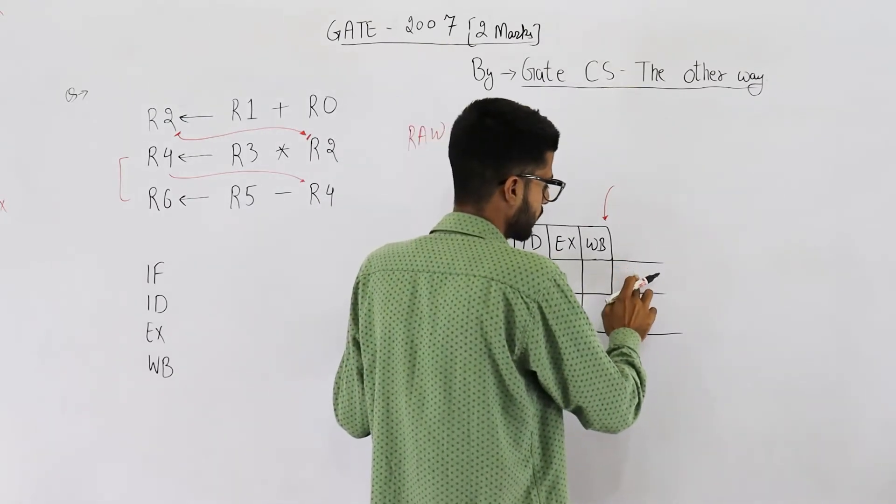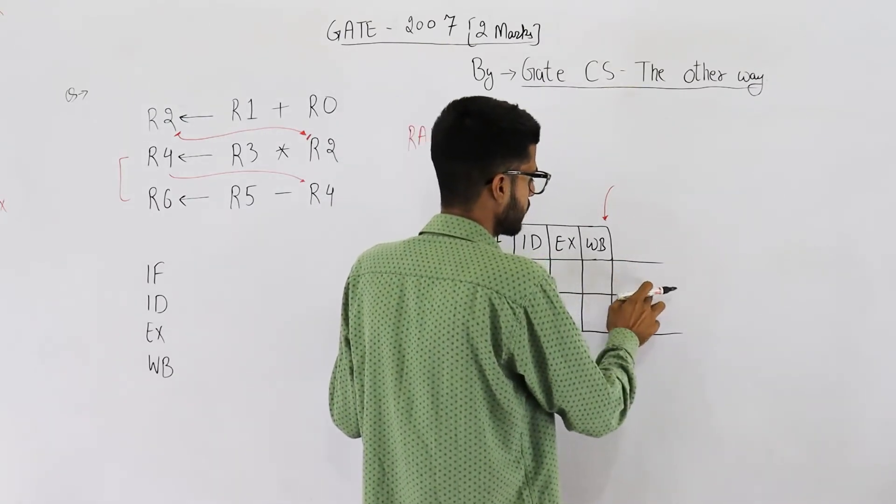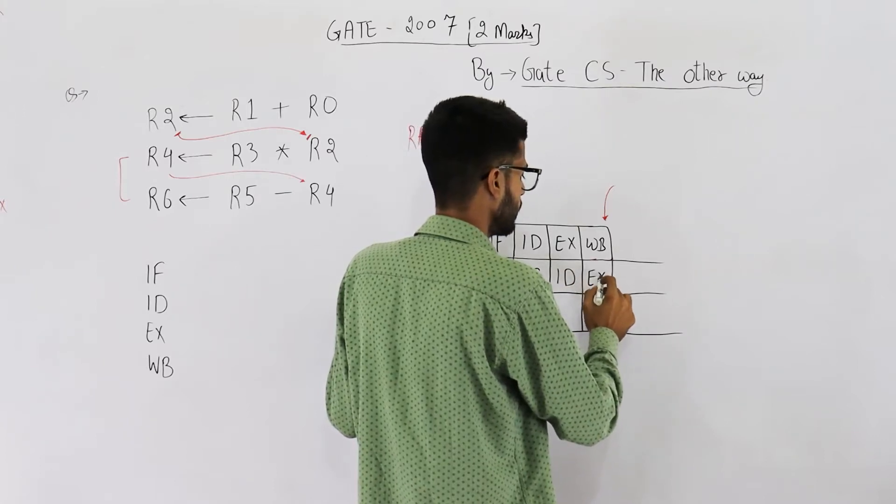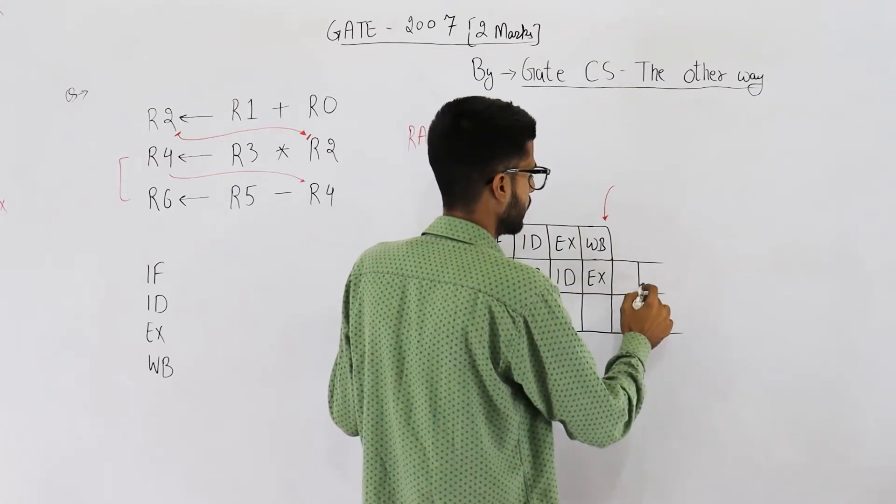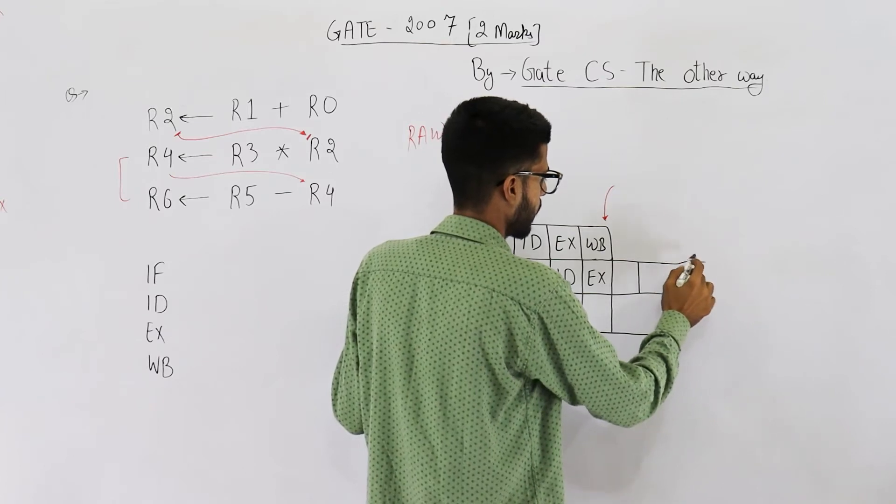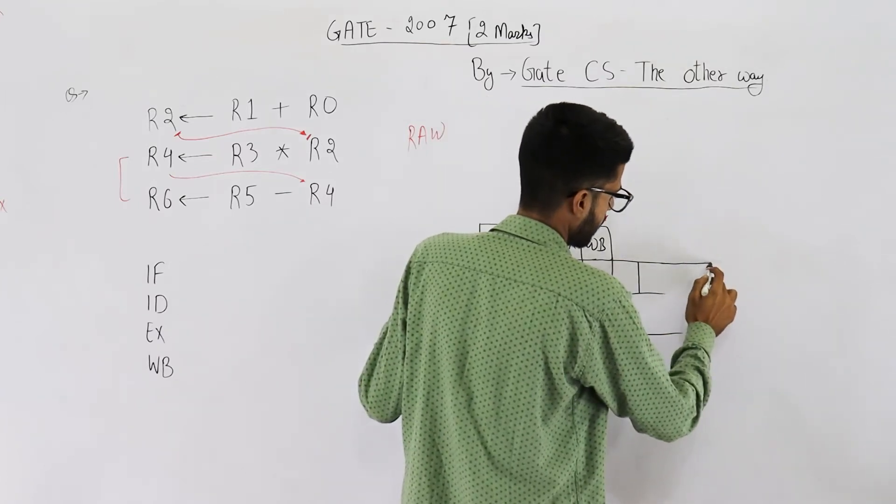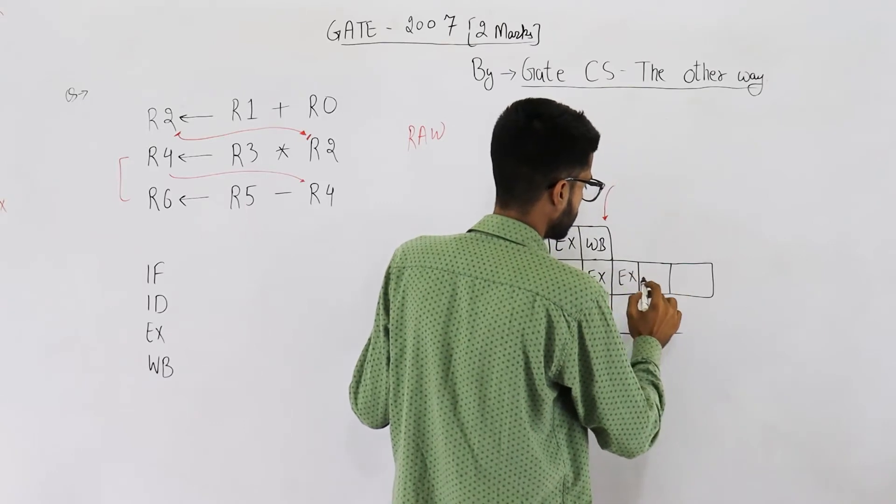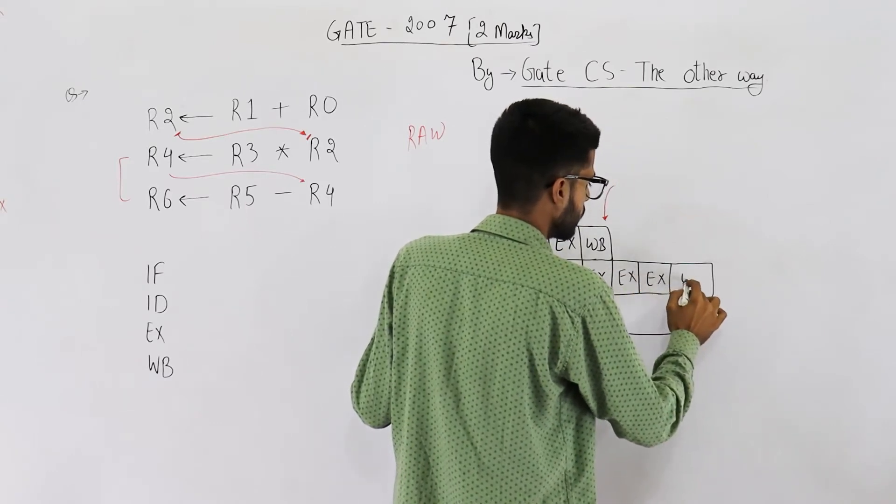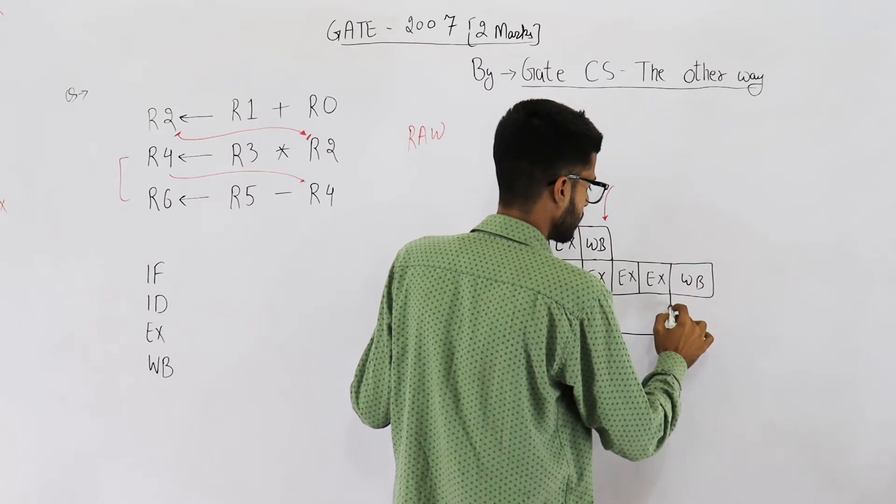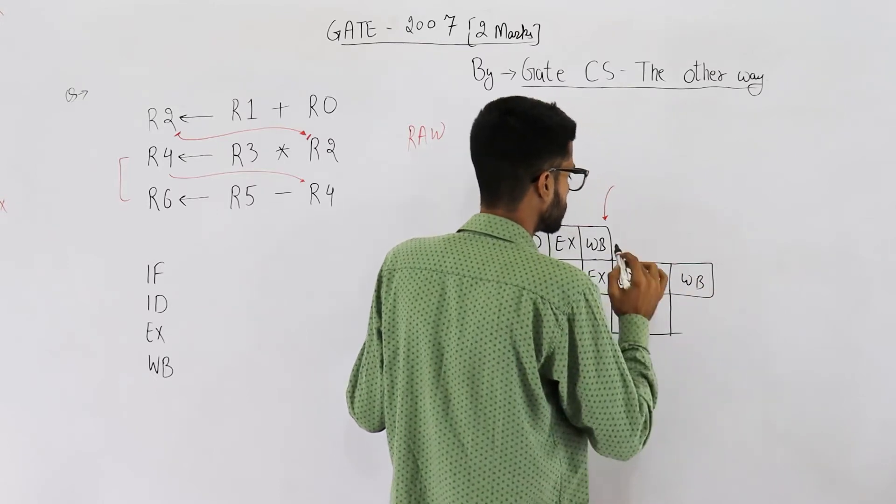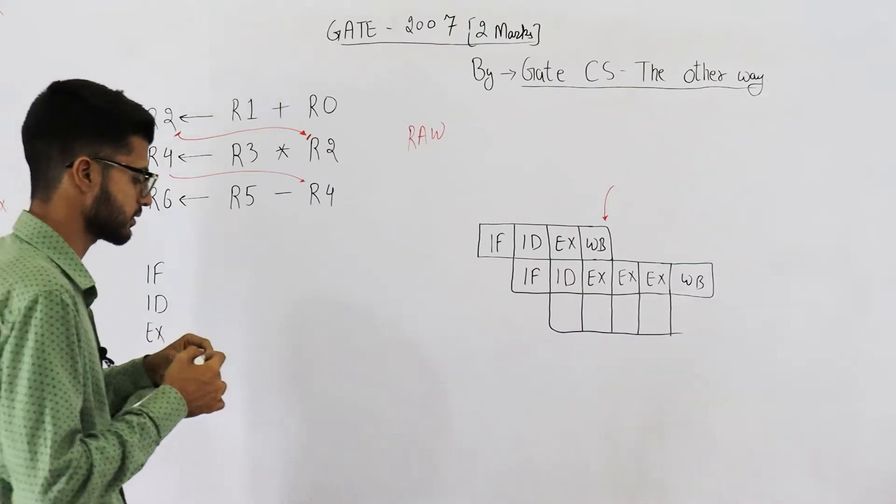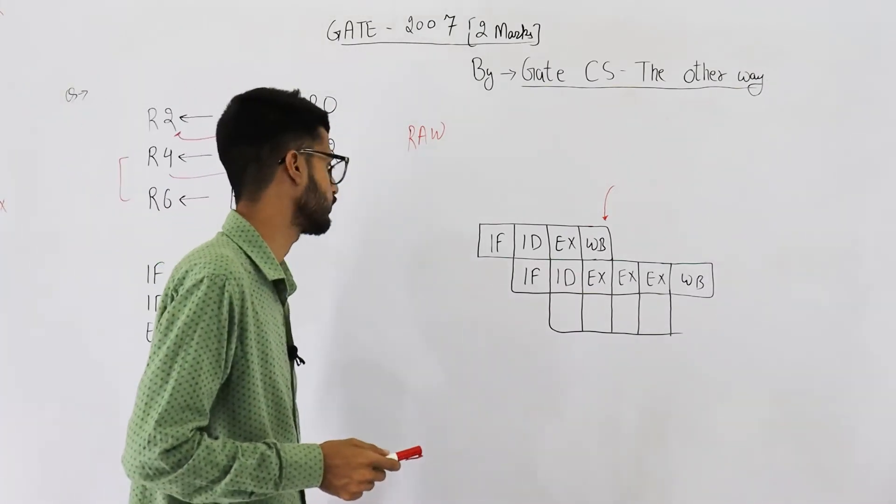But because we are considering operand forwarding, you can just place ID here, you can just place ID here, EX here, and then WB. Three executes followed by a write back, three execute stages because this one is a multiply instruction.